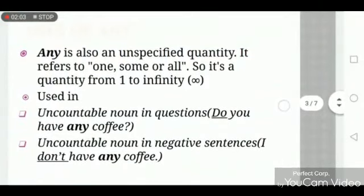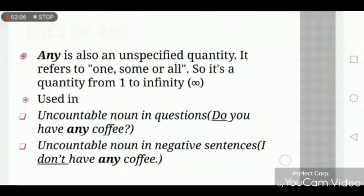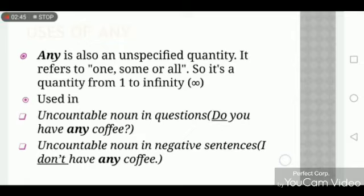Now let's move to the uses of 'any'. Any is also an unspecified quantity — it refers to one, some, or all, so it's a quantity from one to infinity. We use 'any' with uncountable nouns in questions. For example: 'Do you have any coffee?' In this sentence, coffee is an uncountable noun and the statement is a question, so that's why we use 'any'.